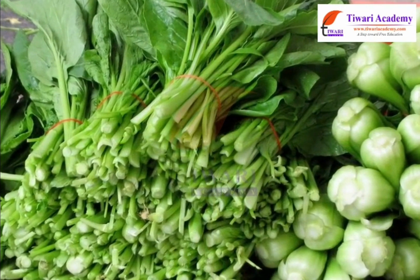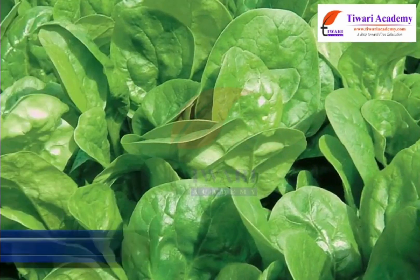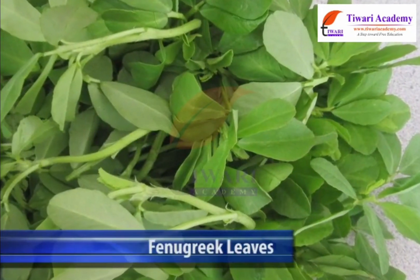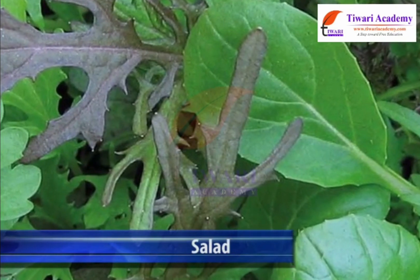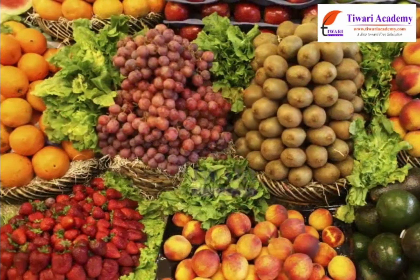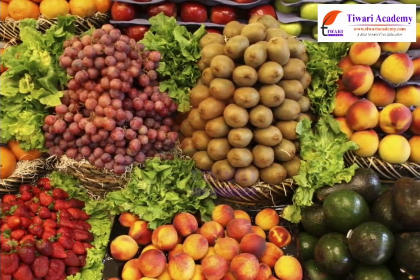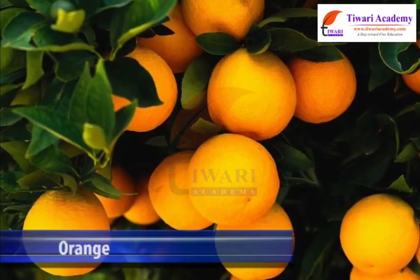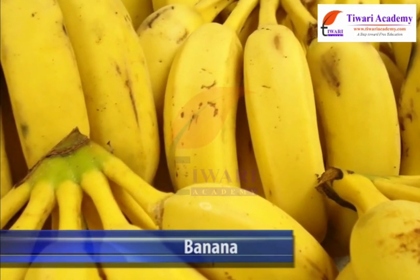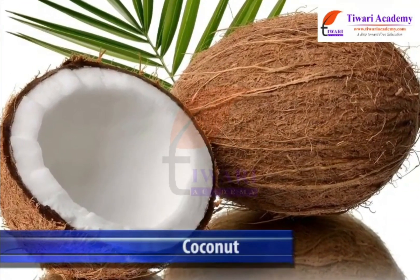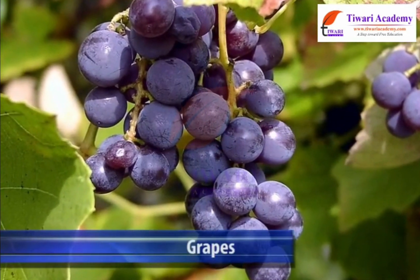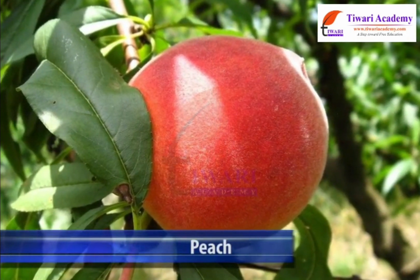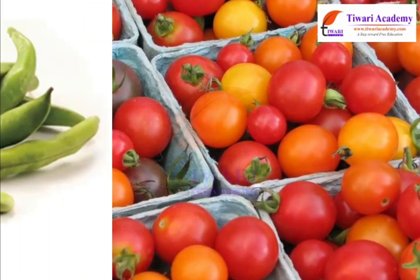Different parts of plants give us different types of food. We eat leaves of spinach, mustard, fenugreek, salad etc. as vegetables. Fruits of many plants are eaten as fruits as well as vegetables. Examples are apple, orange, banana, coconut, grapes, pear, peach, tomatoes, bean pods etc.